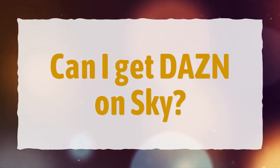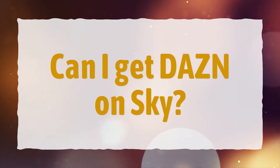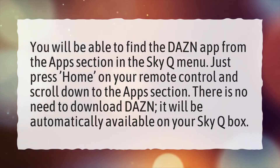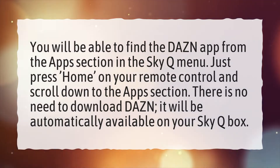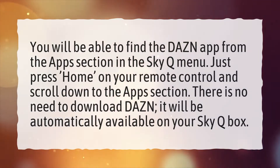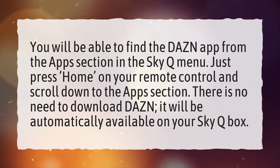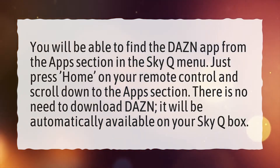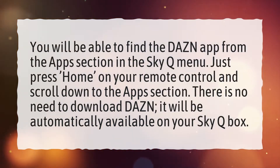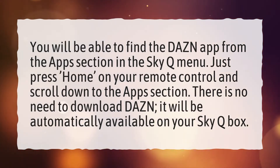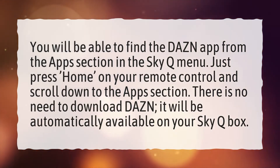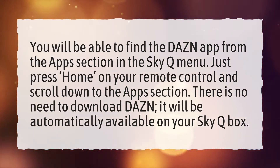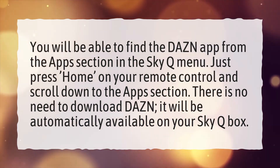Can I get DAZN on Sky? You will be able to find the DAZN app from the App section in the Sky Q menu. Just press Home on your remote control and scroll down to the App section. There is no need to download DAZN — it will be automatically available on your Sky Q box.